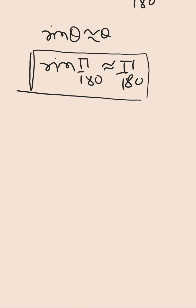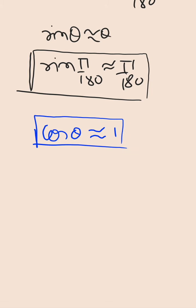The approximation is not finished here — there are more approximations. Now we will see the approximation for the cosine function. For small angles, cosine theta is nearly equal to 1. This is because cosine is a decreasing function in the range 0 to π/2, so it is maximum near 0 degrees. When theta is small and close to 0, cos theta is close to its maximum value of 1. Therefore cos theta ≈ 1.